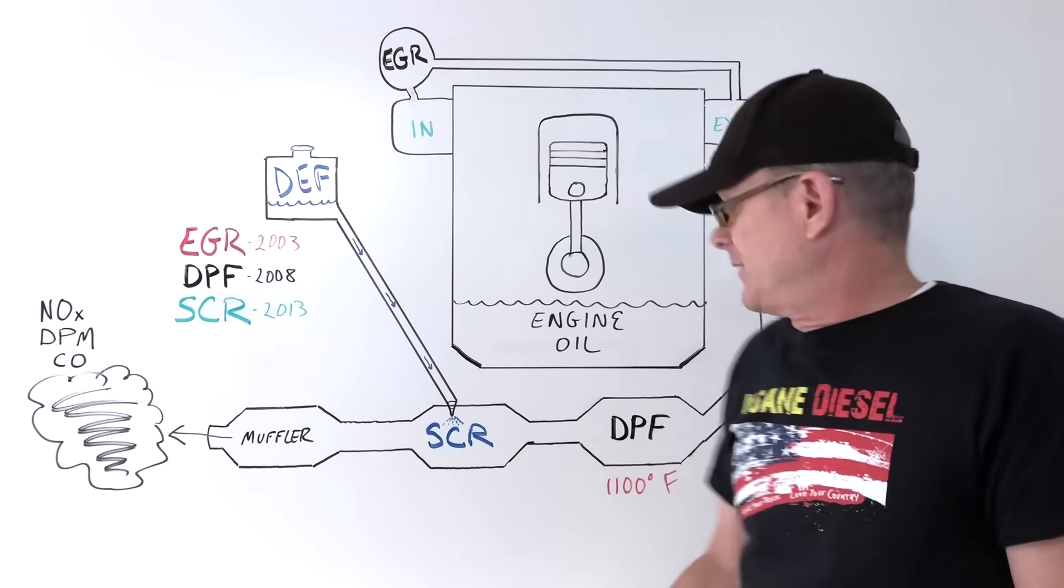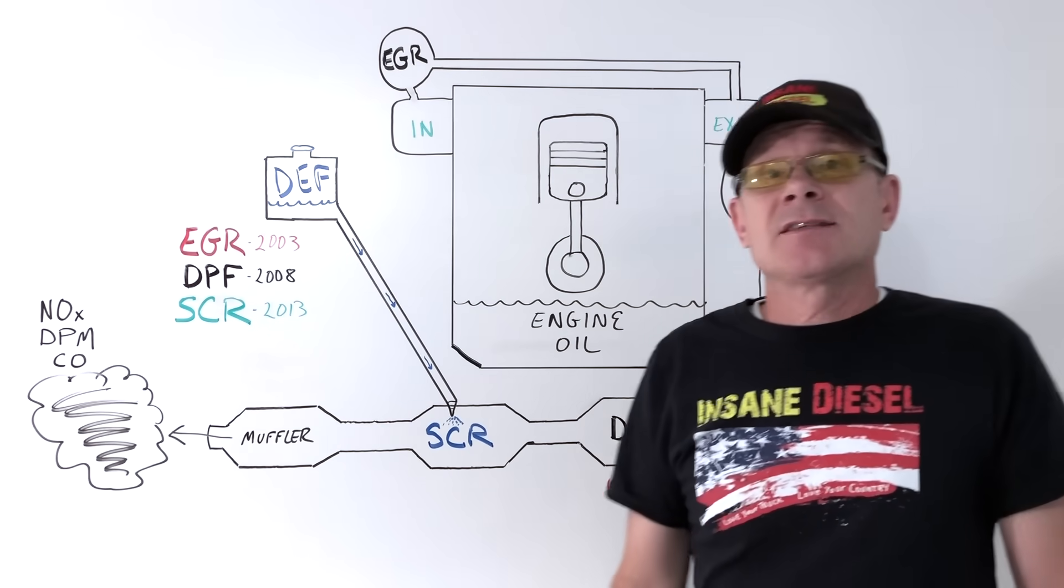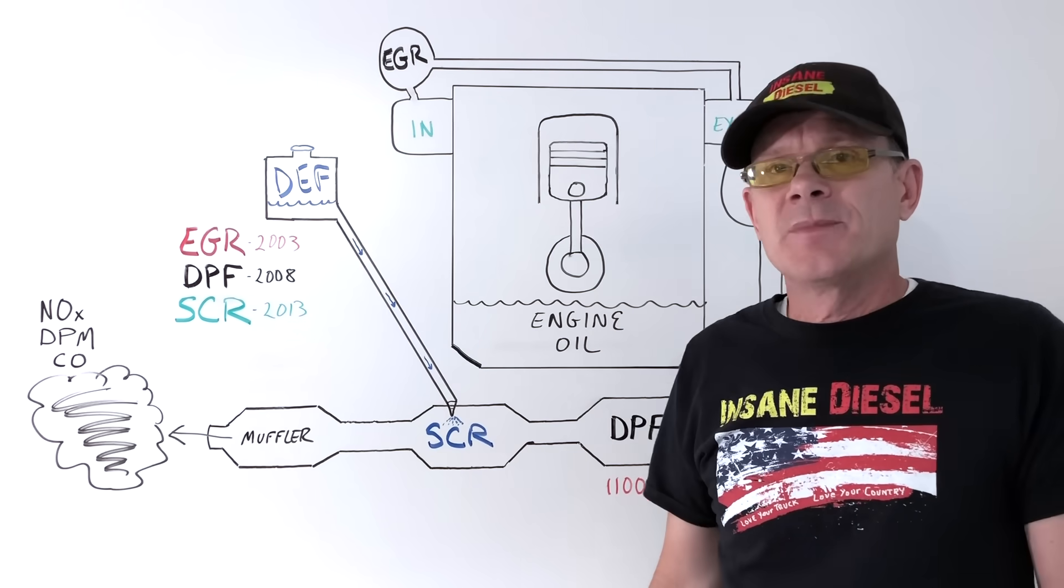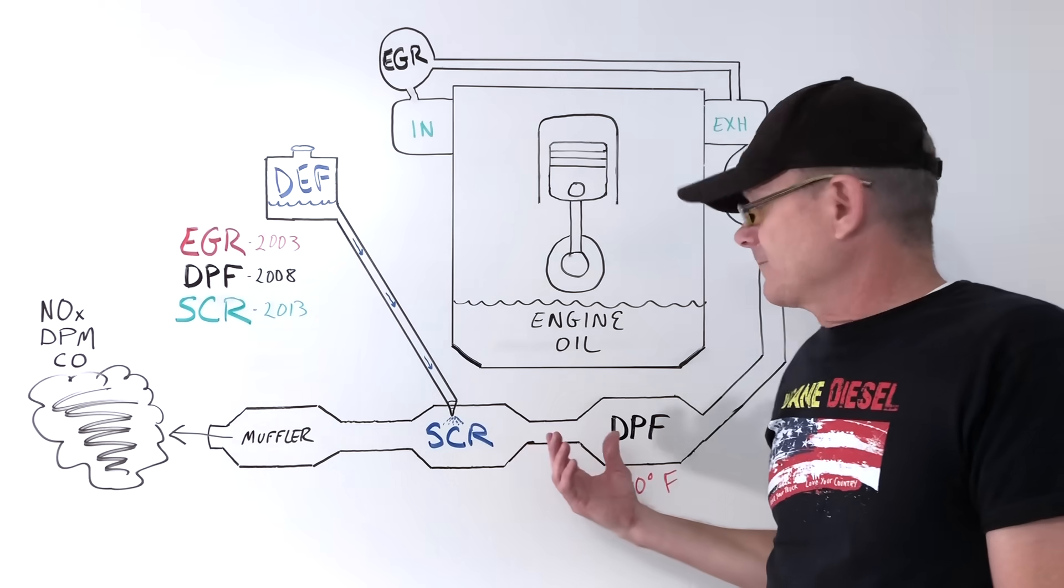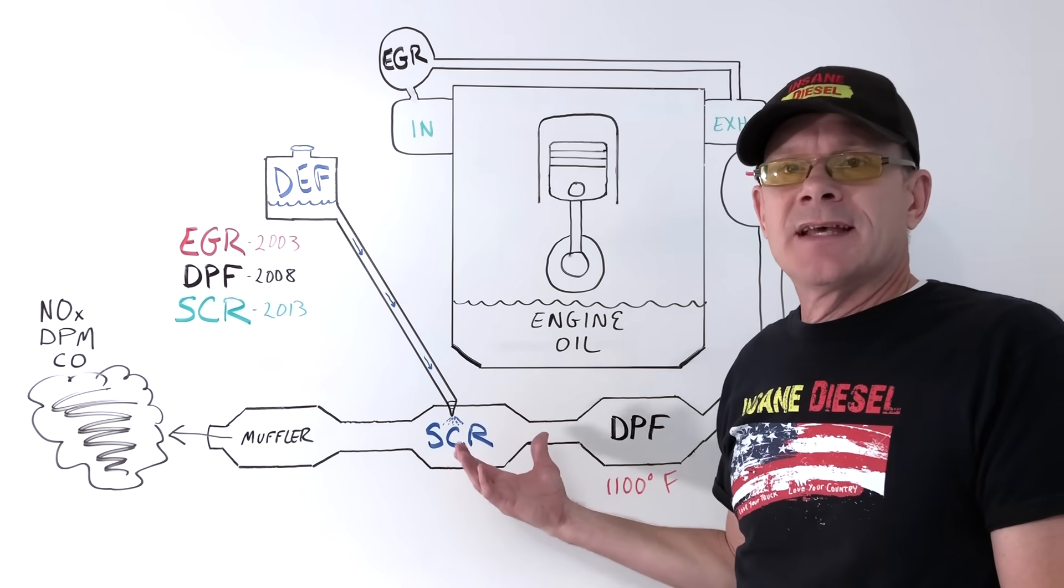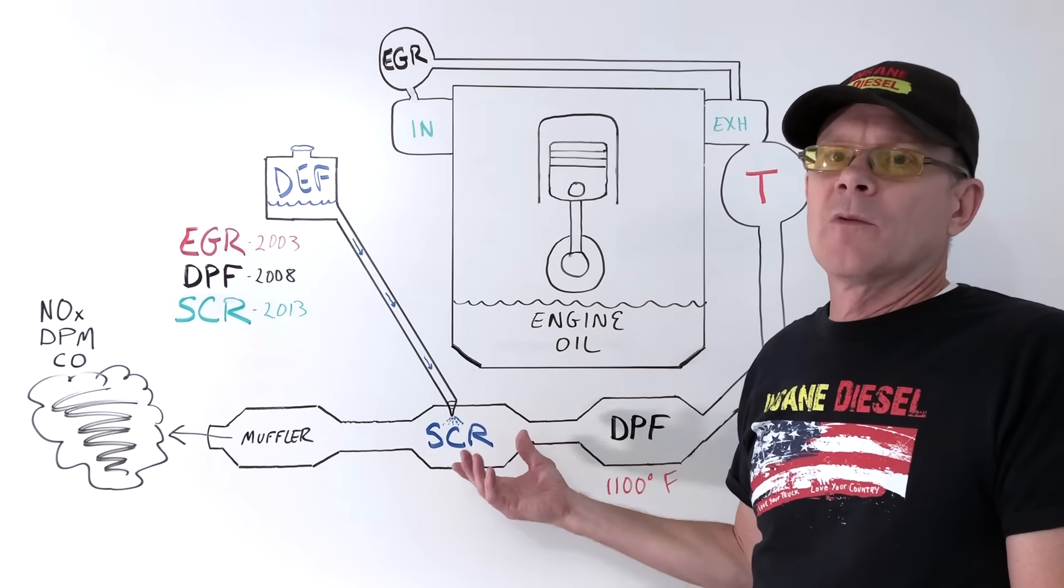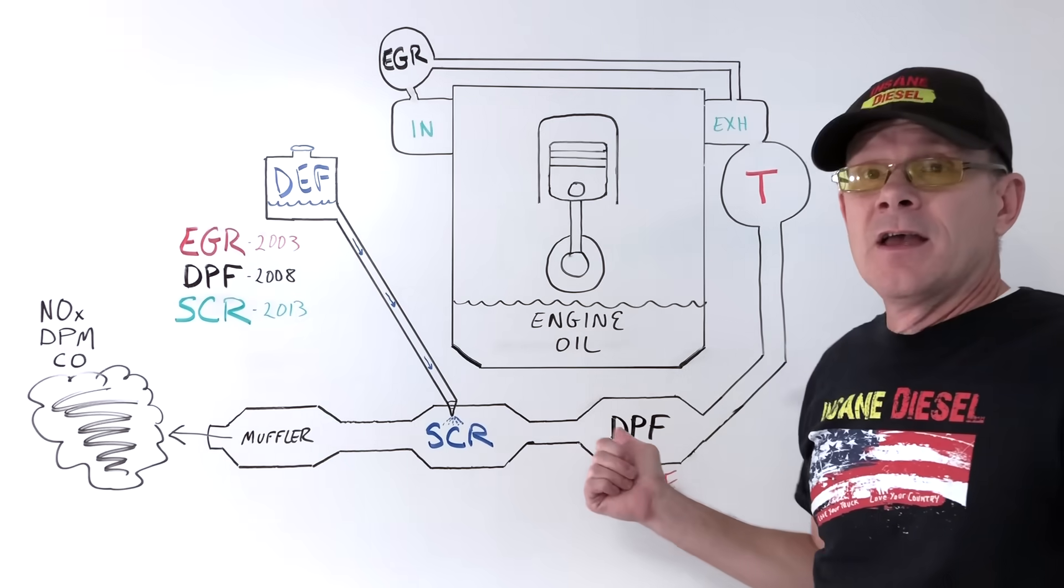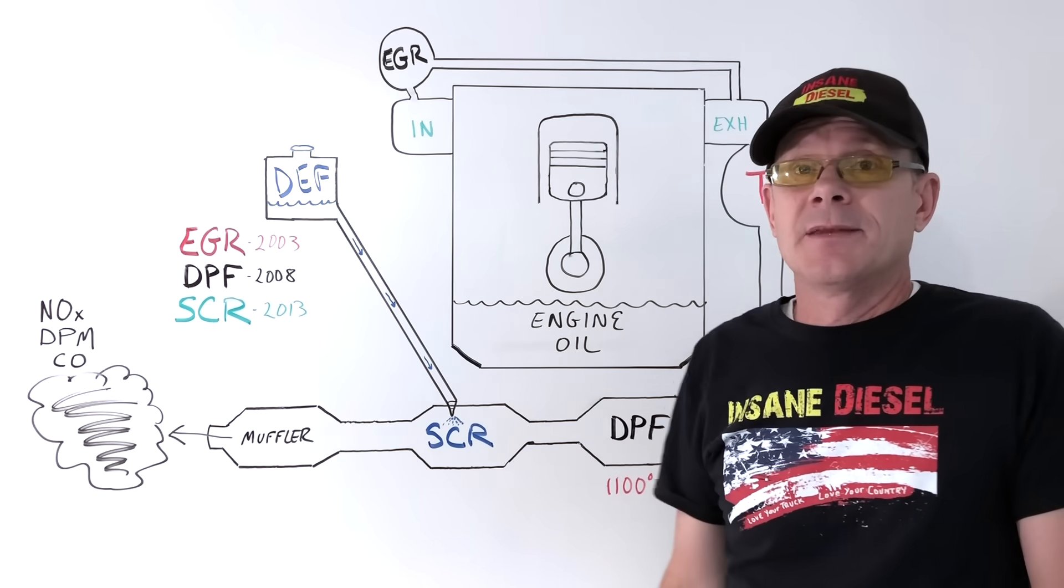Downsides: if the DPF fails, it can pass on water and soot from the engine in a sludgy compound and plug up the SCR. A bad SCR may require the replacement or repair of the DPF as well, or it may quickly plug again.